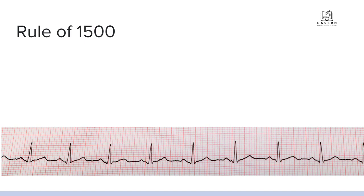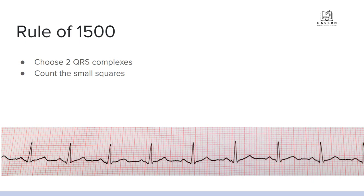Now let's jump into the rule of 1500. This is very similar to the rule of 300 — if you understand 300, the 1500 rule will be a breeze. You again choose two QRS complexes, but instead of counting large squares, you count the small squares. There are 1500 small squares in one minute. This method is even more accurate than the previous two because you're counting an even more specific, finite unit. Remember, a regular heartbeat is important — if a patient has an irregular pulse, the best way to get an accurate heart rate is to listen to their apical pulse for 60 seconds. Take the number 1500 and divide it by the number of small squares.